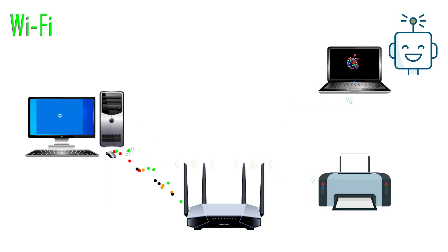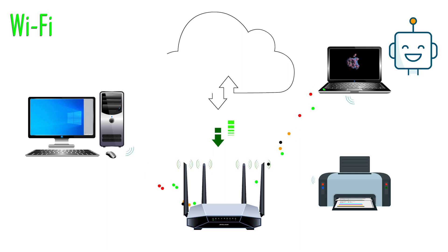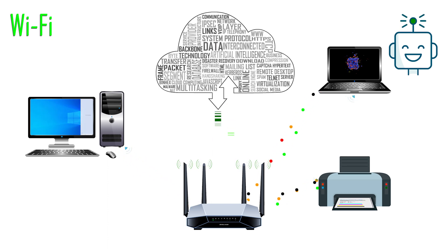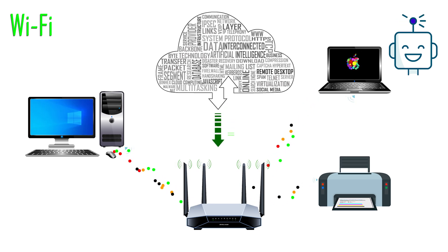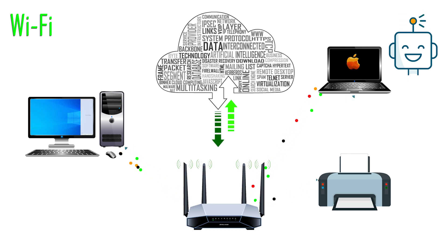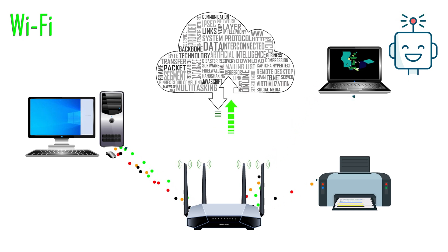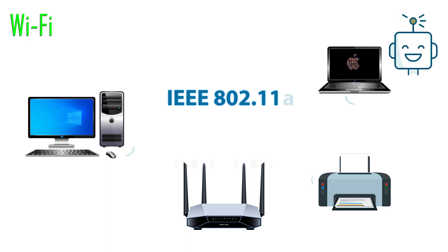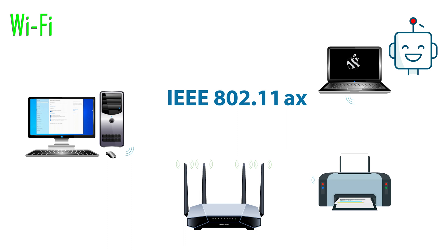Devices transmit a radio signal back to the router, which may connect to the wide area network, also called the Internet. Wi-Fi refers to a protocol, or a set of rules, for how information can be sent across a radio network. The protocol is called IEEE 802.11, and there are several versions available, such as 802.11a, 802.11b, etc.